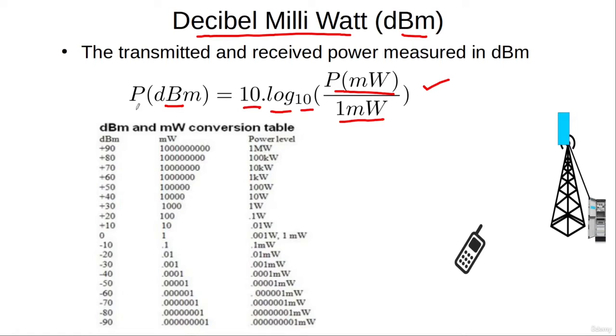As a result, we get the power in dBm. Using this formula, if we convert 1 megawatt into dBm, we get 90 dBm. If we convert 100 watts into dBm, we get 50 dBm. If we convert 1 milliwatt into dBm, since 1 milliwatt is the reference, we get 0 dBm.